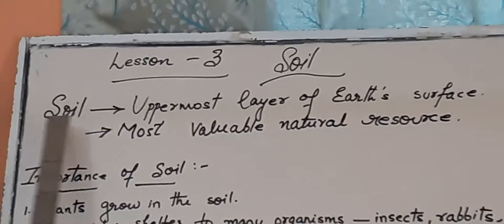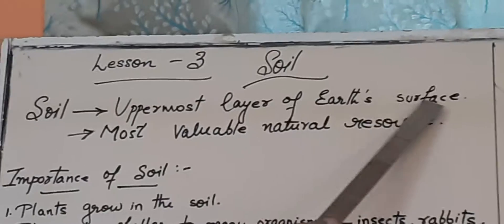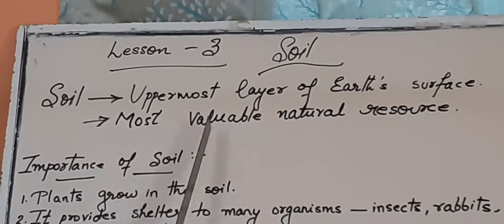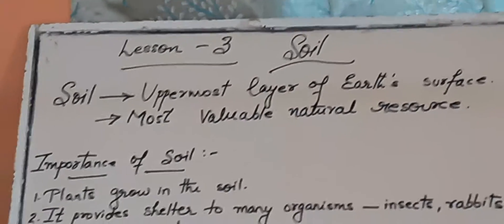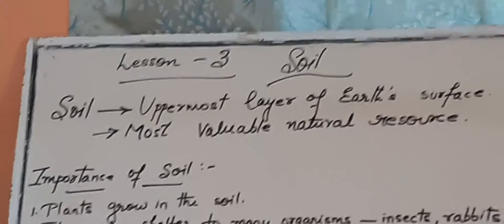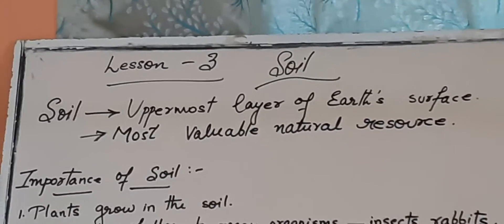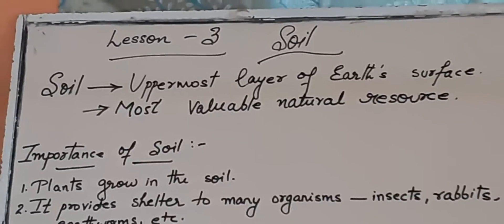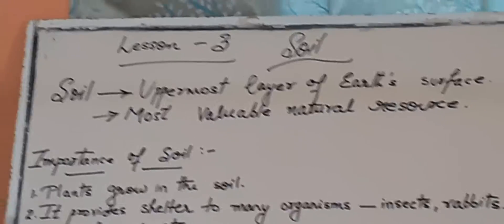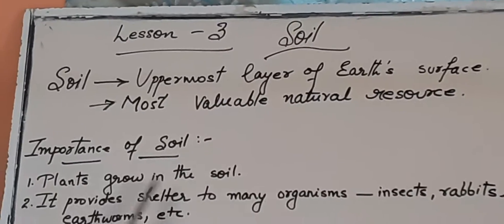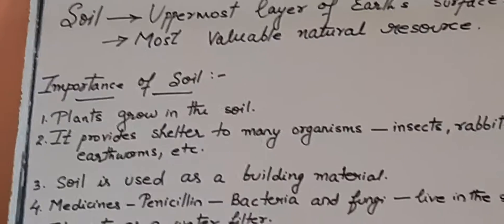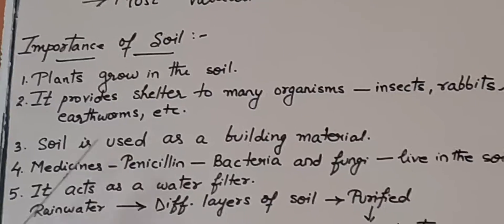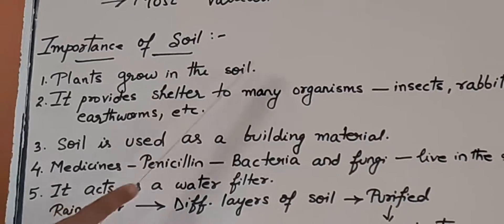Soil is the uppermost layer of earth's surface and it is the most valuable natural resource. Now we will see the importance of soil. Firstly, plants grow in the soil. Soil supports plant growth by holding their roots firmly.